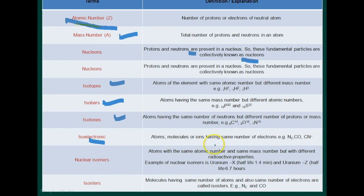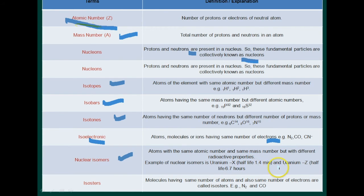Isoelectronics means atoms, molecules, or ions having the same number of electrons. Nuclear isomers are atoms with the same atomic number and same mass number but different radioactive properties. For example, uranium has a half-life of 1.4 minutes and another uranium species has a half-life of 6.7 hours.